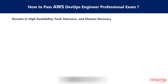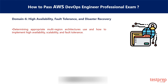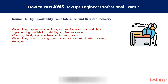Domain 6 is High Availability, Fault Tolerance, and Disaster Recovery. This domain includes various concepts of disaster recovery and covers 16% of weightage in the exam. The sections include: 1. Determining appropriate multi-region architecture use and how to implement high availability, scalability, and fault tolerance. 2. Choosing the right services based on business needs. 3. Determining how to design and automate various disaster recovery strategies.